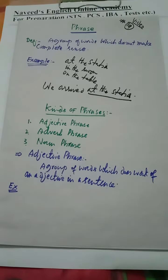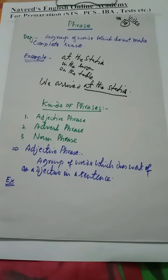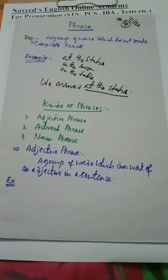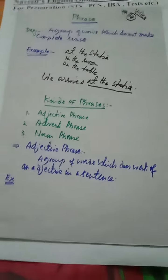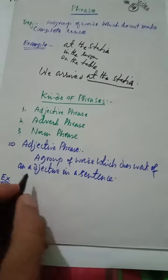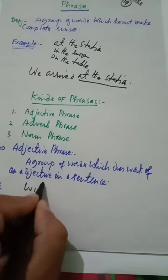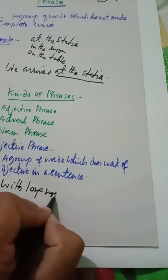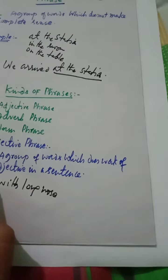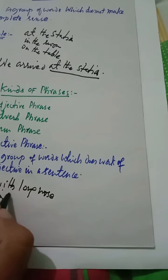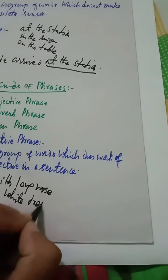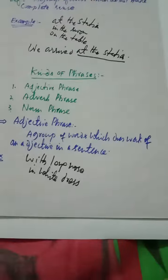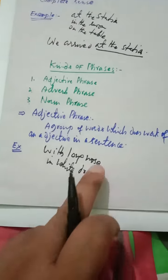Adjective phrase definition: a group of words which does the work of an adjective in a sentence. For example, with long nose, with white dress. Here long is an adjective which qualifies the noun nose.